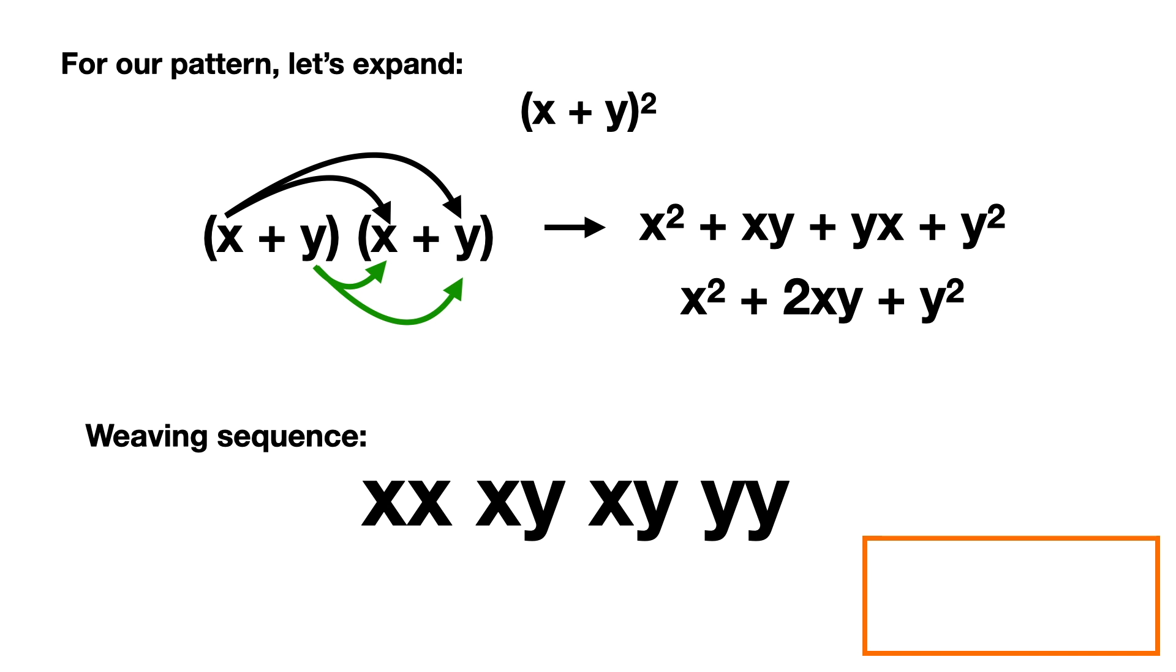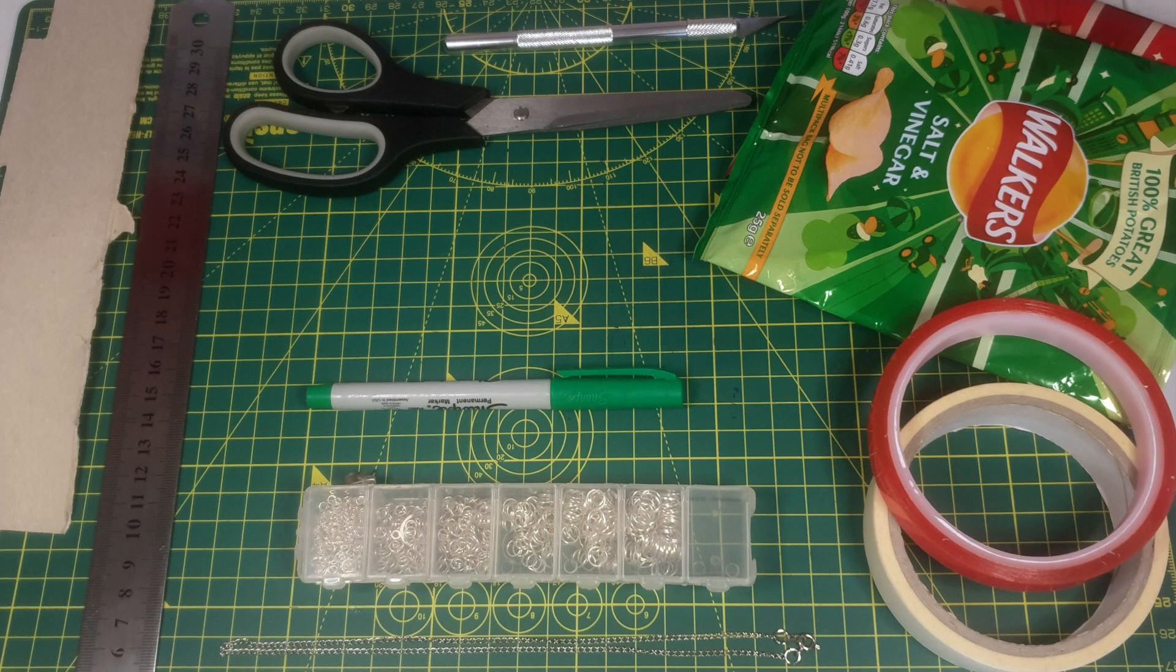I'll be using green and silver to make use of the outer and inner colors of my crisp packet. X will be represented using silver strips and y with green strips, all arranged in that final sequence. Let's get started first of all with what you'll need.